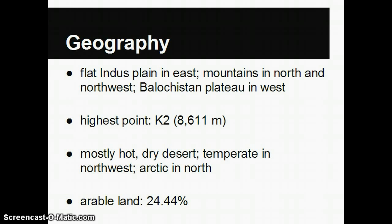The highest point in Pakistan is K2 in the Himalayan mountains, with an elevation of a little over 8,600 meters. The lowest point is at sea level on the coast of the Indian Ocean.